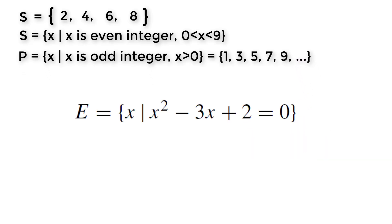Suppose E is a set of x such that x squared minus 3x plus 2 equals zero. Can you find the elements of this set?